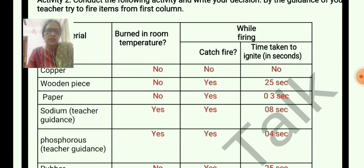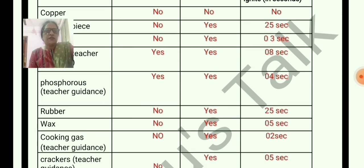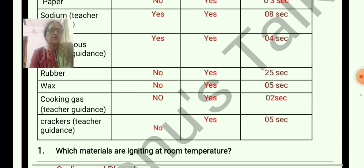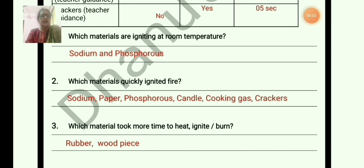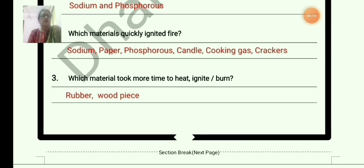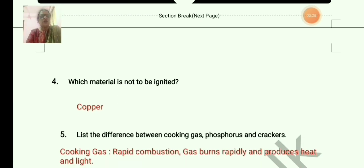Time taken to ignite: copper — no, it won't burn. Wooden piece — approximately 25 seconds. Paper — approximately 3 seconds. Sodium — 8 seconds. Phosphorus — 4 seconds. Rubber — 25 seconds. Wax — 5 seconds. Cooking gas — 2 seconds. Crackers — 6 seconds. Which materials ignite at room temperature? Sodium and phosphorus. Which materials quickly ignited? Sodium, paper, phosphorus, candle, cooking gas, crackers. Which materials took more time to ignite? Rubber and wood. Which material did not ignite? Copper.